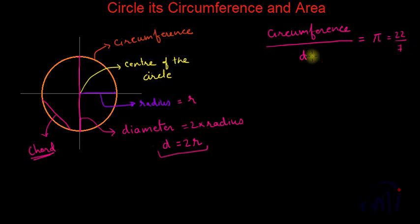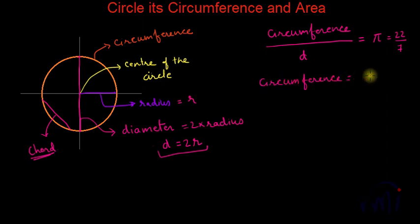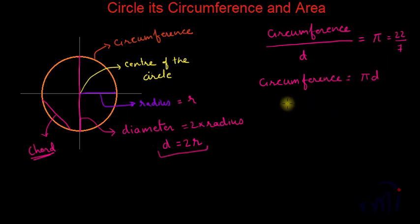From this relationship we get the formula for finding the circumference of a circle, which is equal to pi times d. And if we substitute d = 2r, the formula for circumference C becomes 2πr.